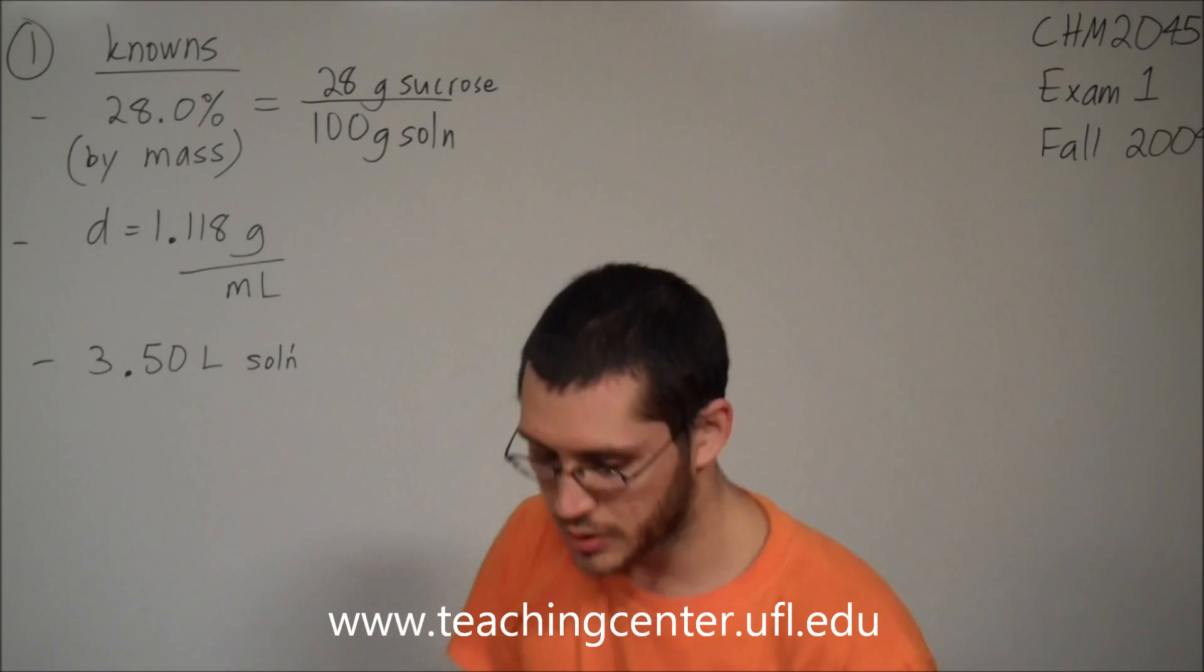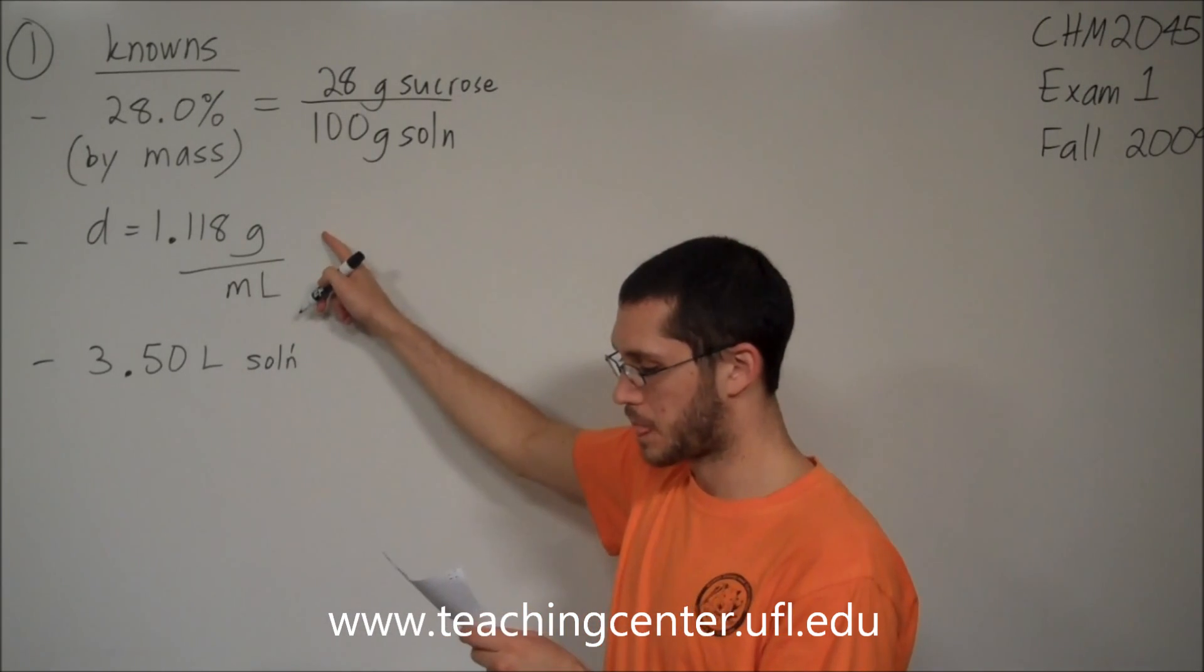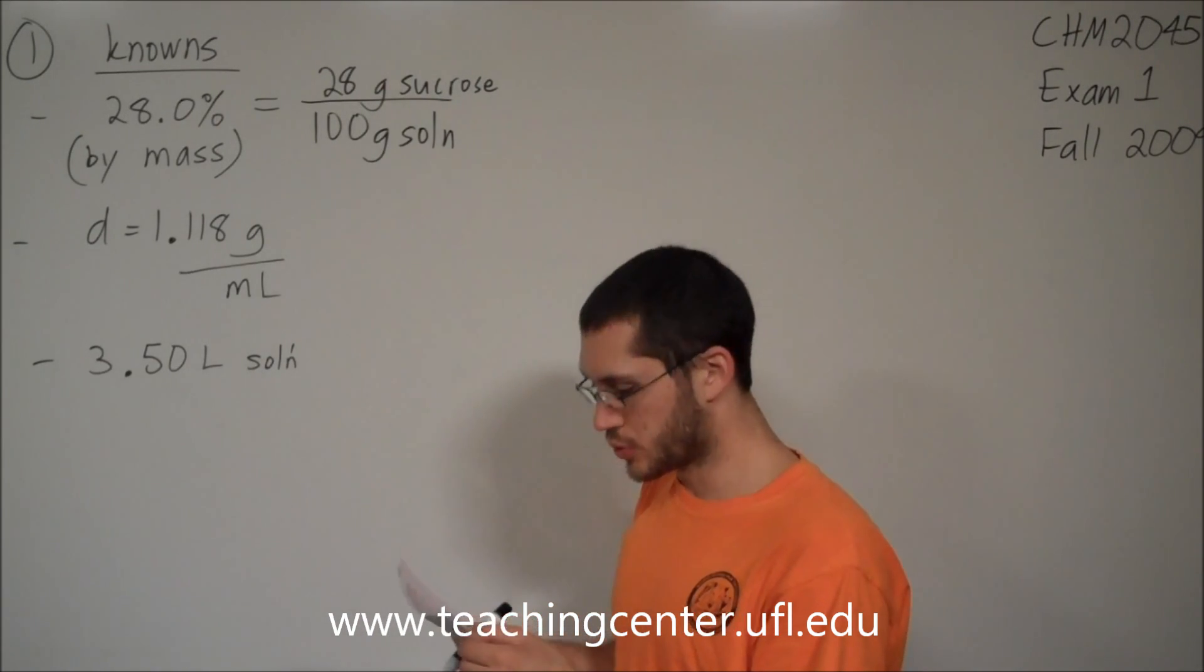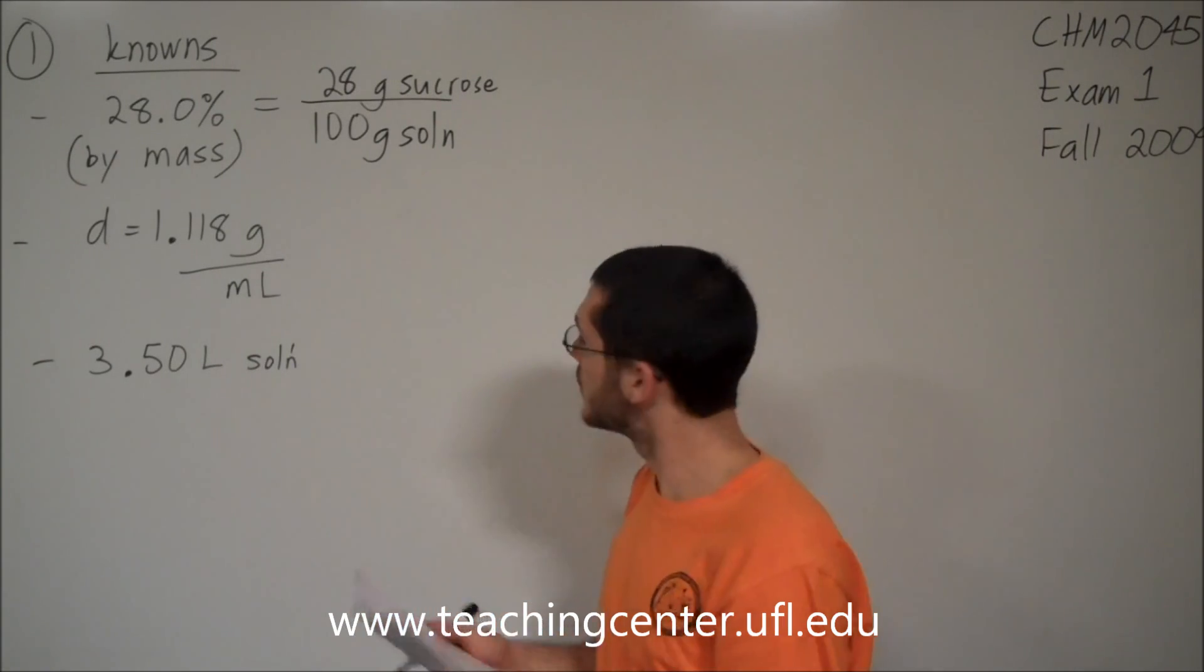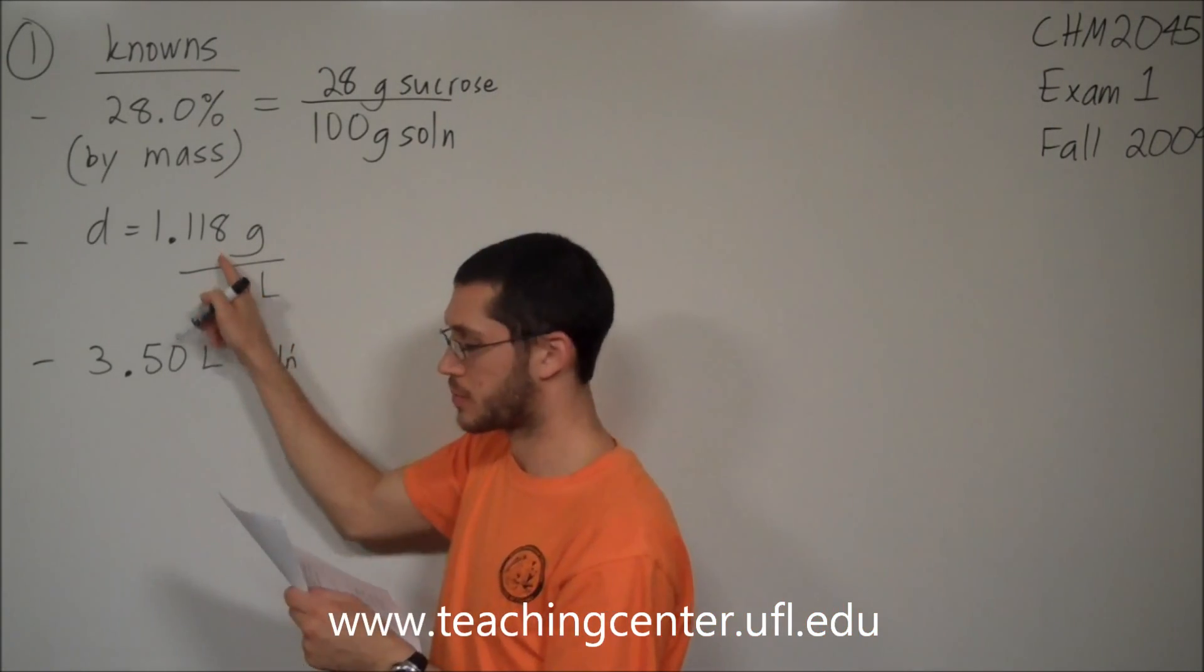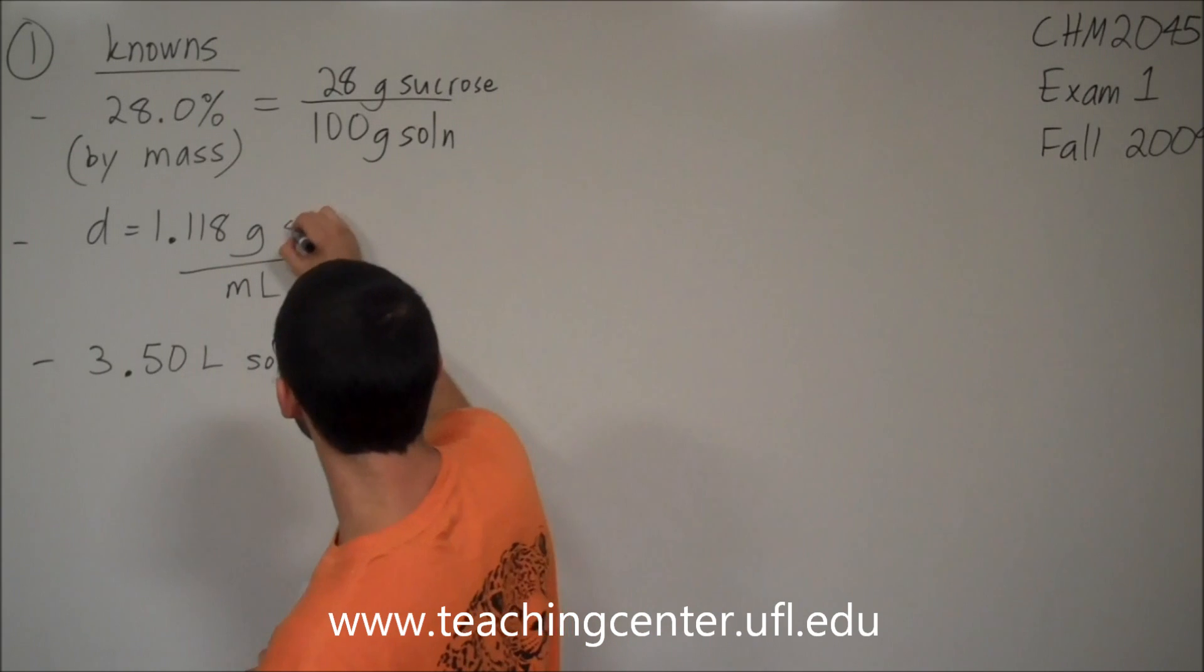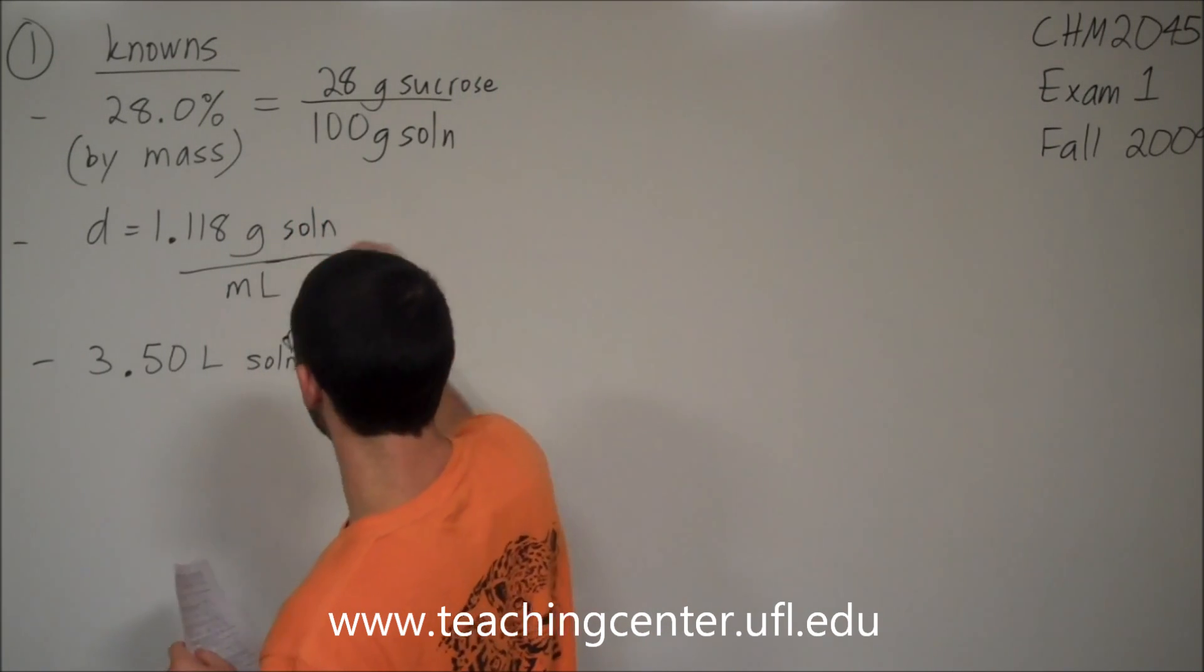And similarly, the density is not complete. The solution has a density of 1.118 grams per ml. So this should be grams of solution divided by ml of solution.